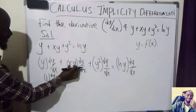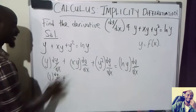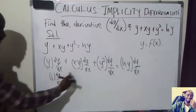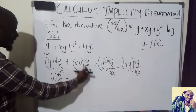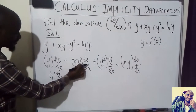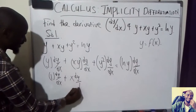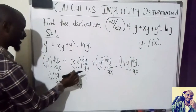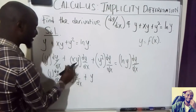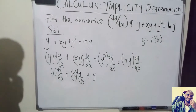Then we come to the xy term — this is the product of two functions, so we're going to use the product rule, as discussed in the previous video. We keep x constant and differentiate y to get 1, but because we differentiated y, we attach dy over dx. Then we keep y constant and differentiate x to get 1. Every time you differentiate x, you don't attach dy over dx. That is what implicit differentiation is all about.